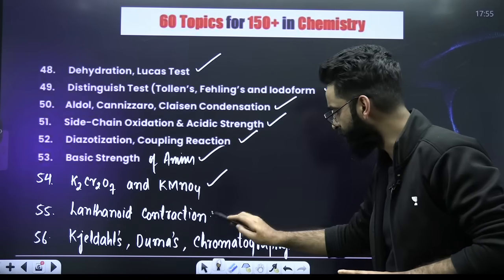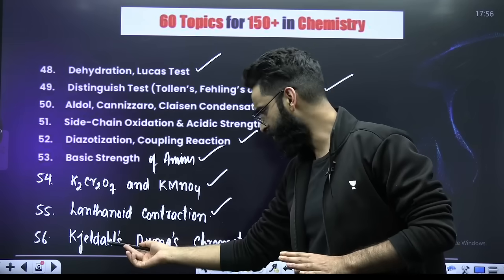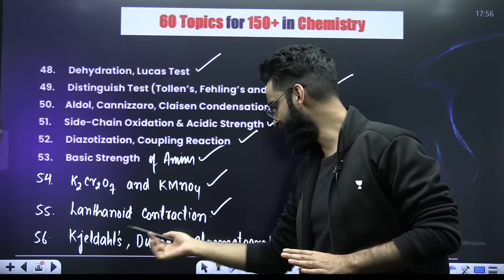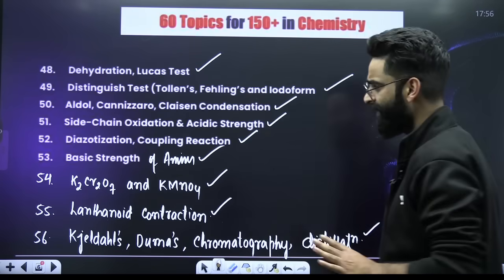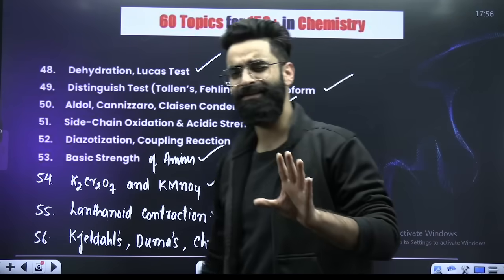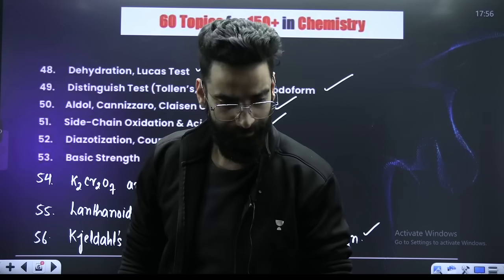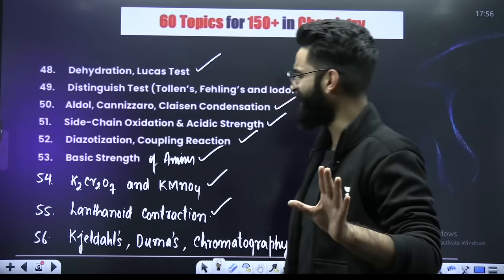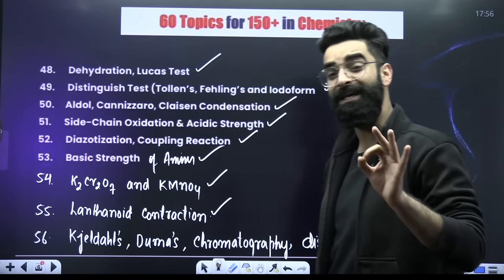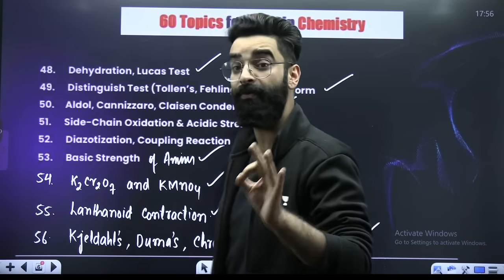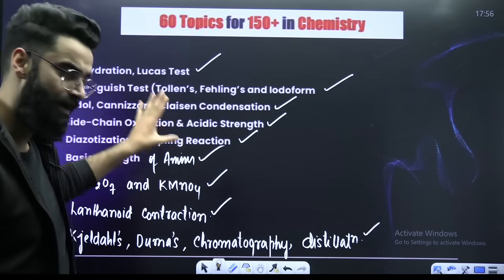Then Kjeldahl's method, Dumas method, chromatography and distillation — these are the short topics of your chemistry. If you do these topics, trust me, you can easily score 140 plus in your chemistry, but these topics are to be prioritized.